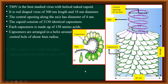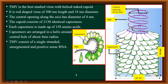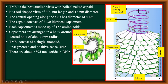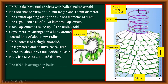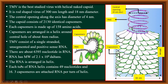The TMV consists of a single-stranded, unsegmented, positive-sense RNA as genetic material, with a central hole of about 4nm diameter. In this RNA there are about 6395 nucleotides and the molecular weight of this RNA is about 2.1 × 10⁶ Daltons. The RNA is arranged in a helix, and each turn of the helix contains 49 nucleotides, with 16.3 capsomers attached per turn of helix. That means 3 nucleotides are linked to a single capsomer — the ratio of nucleotides to capsomers is 3:1.